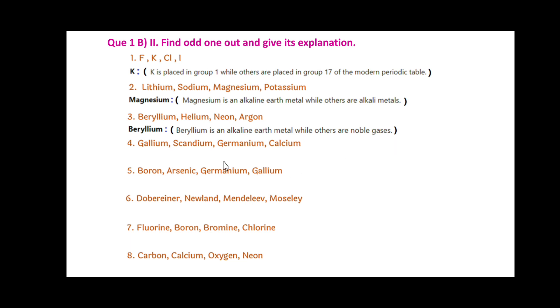Next: Gallium, Scandium, Germanium and Calcium. Among these, Germanium is the odd one out. Since Germanium is a metalloid, while others — Gallium, Scandium and Calcium — are metals.